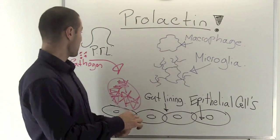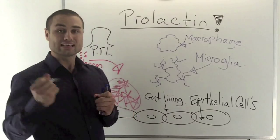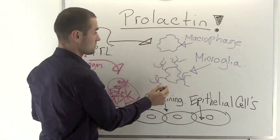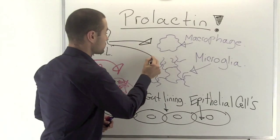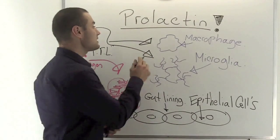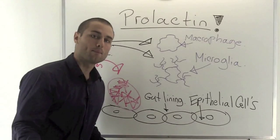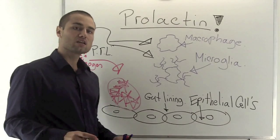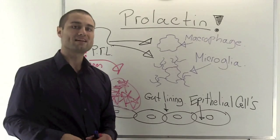So what prolactin does right here represented in the black is signals your macrophage, your immune system, microglia. So it signals both of them and it basically tells them to wake up and start a process called phagocytosis. Now basically this word phagocytosis, all it means is to eat.